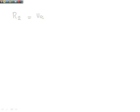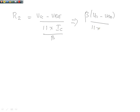R2 should be equal to VCC minus VBE all divided by 11 times IC divided by beta. Simplification: beta VCC minus VBE all over 11 times IC.